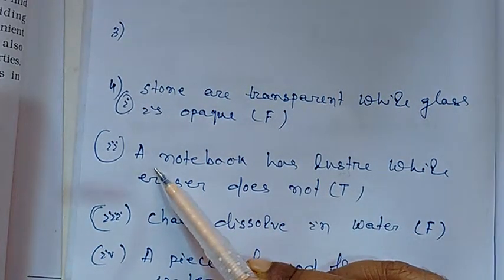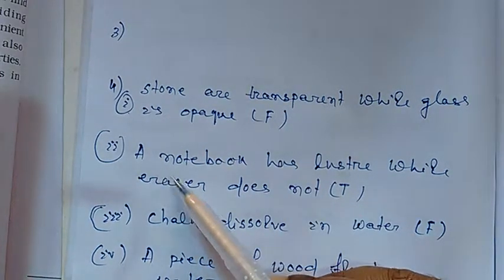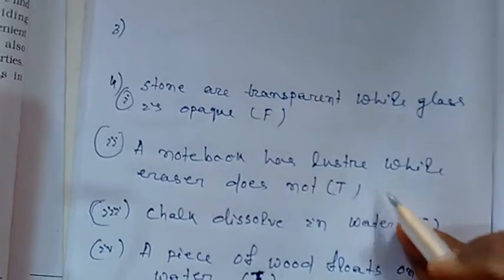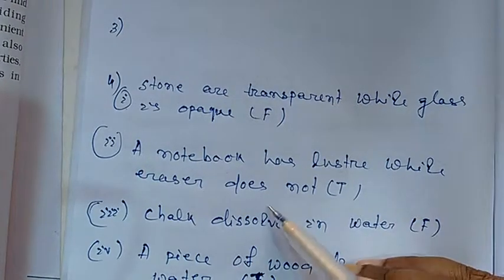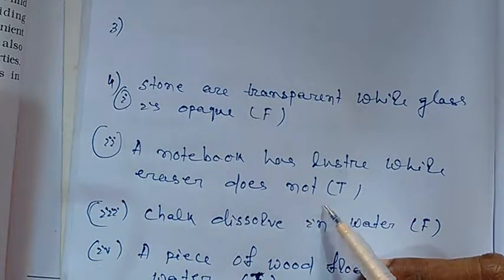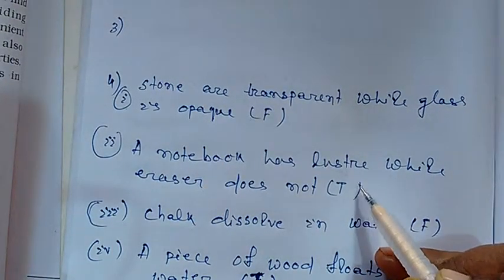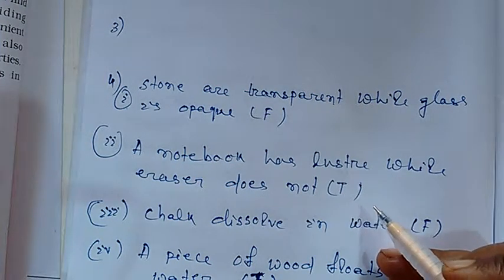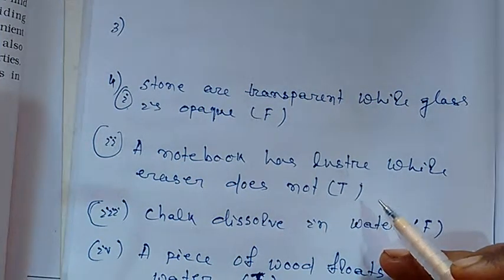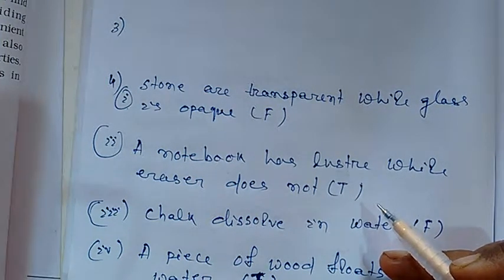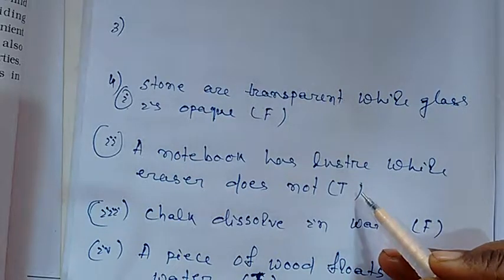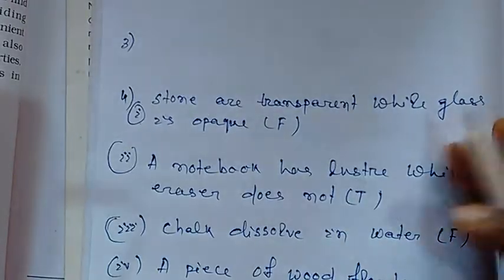Question number 2: a notebook has luster while eraser doesn't. This is true. We see that a notebook, if it is made up of good quality paper, has luster.